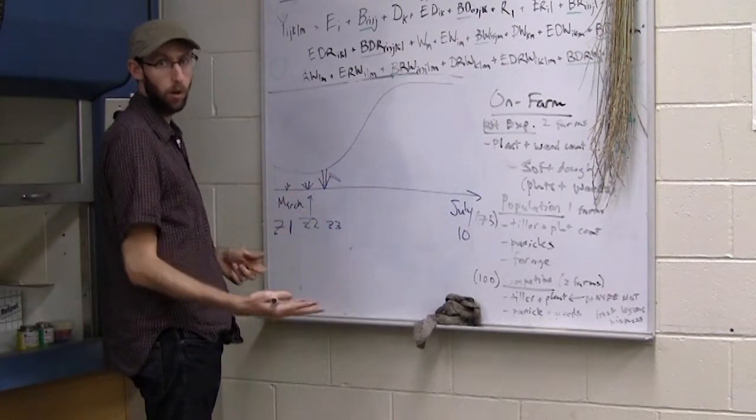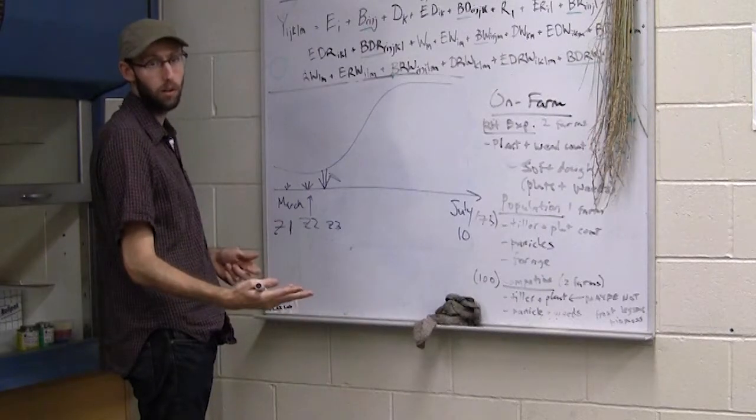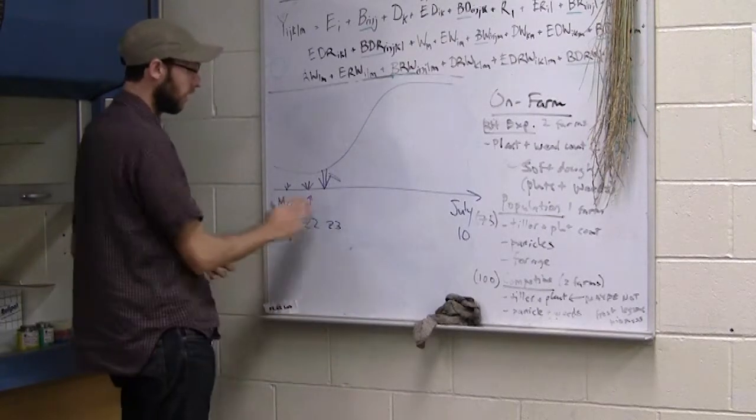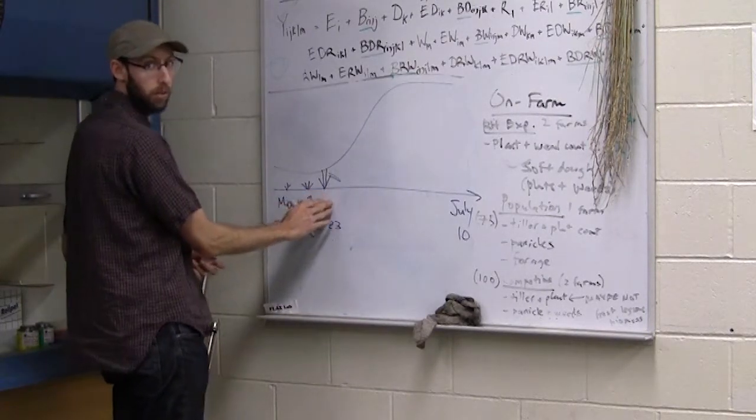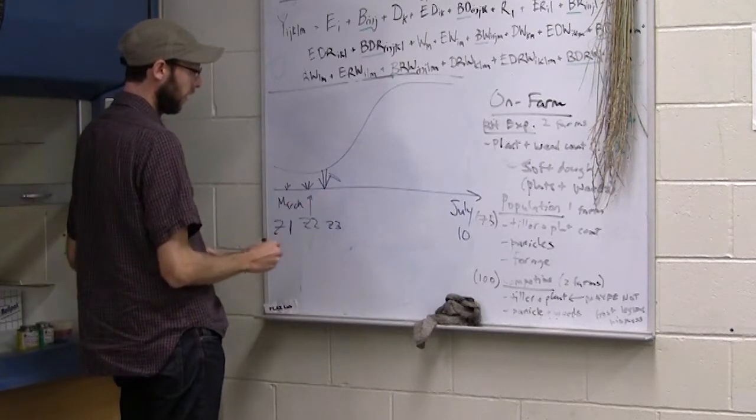The major disease for a crop like oats, for instance, is oat crown or oat stem rust. And this would be that first intervention point for something like that.